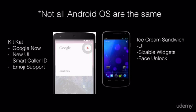For example, KitKat is the latest Android, featuring things like Google Now, a new user interface, smart caller ID, and emoji support. Then you have Ice Cream Sandwich, which is a little older and had its own features like sizable widgets and face unlock. While newer versions like KitKat build off previous versions, you'll still find 2013-2014 devices running Ice Cream Sandwich. The ability to make cheap hardware means manufacturers can put Android on very simple phones or tablets, but it also means the market is very fragmented.